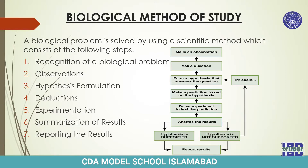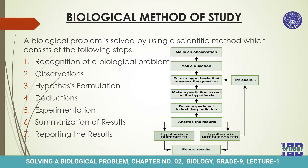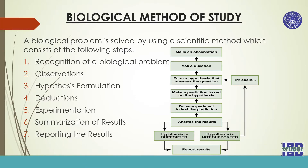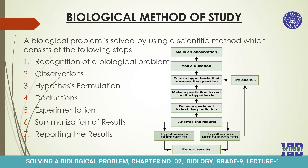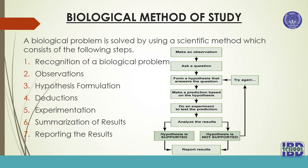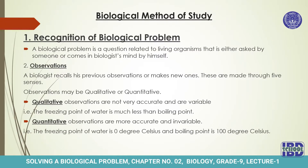The next step is experimentation. We do experiments to test the predictions or deductions, and after analyzing the results we can see whether the hypothesis made in the third step was correct or not. If all results support the hypothesis, it becomes the final result. If the hypothesis is not supported, it is rejected and a new hypothesis is made, and we proceed by following these steps again.